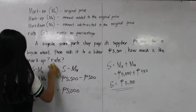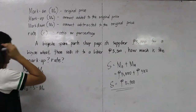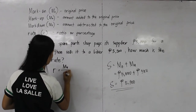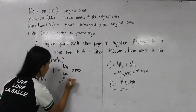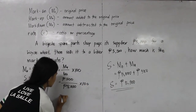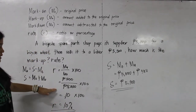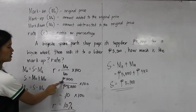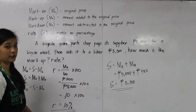So in this problem we are going to find the markup rate. Earlier we solved that our markup is 500 pesos. Markup rate has the formula of markup divided by the original price times 100. Our markup is 500 pesos and our original price is 5,000. So 500 divided by 5,000 equals 0.10, times 100, giving us a markup rate of 10%.